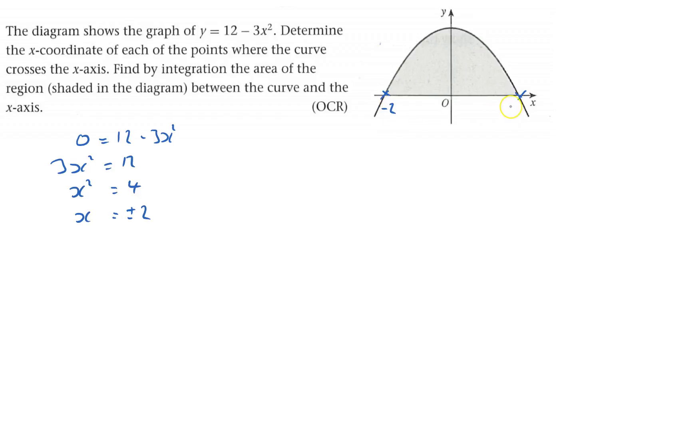So that's negative 2, that's positive 2. And now I've got to find by integration the area of that region. So basically you've got to integrate between minus 2 and 2, 12 minus 3x squared with respect to x, because we're doing it underneath the curve.